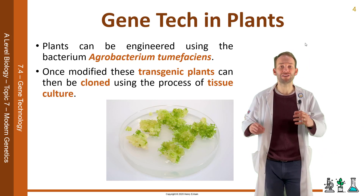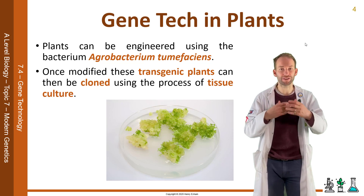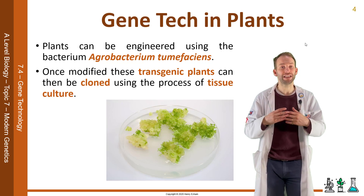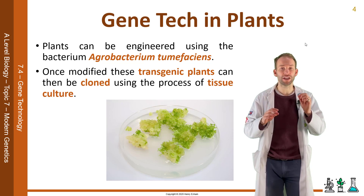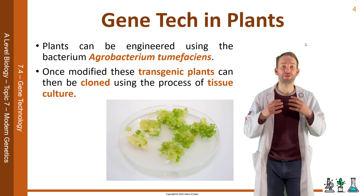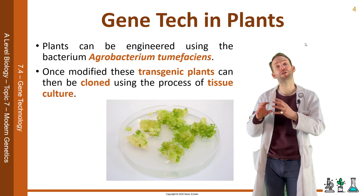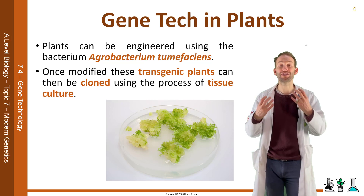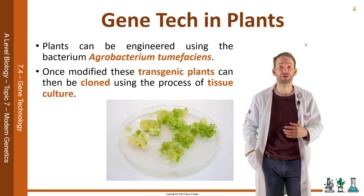The way that works is you take a few cells from the dividing meristem of the plant that you've already modified and you put them on a gel impregnated with plant hormones. This produces a mass of undifferentiated plant cells by mitosis. Then you transfer them to another gel which has got hormones to stimulate root growth and stem growth, and you end up with clones of these genetically modified plants.